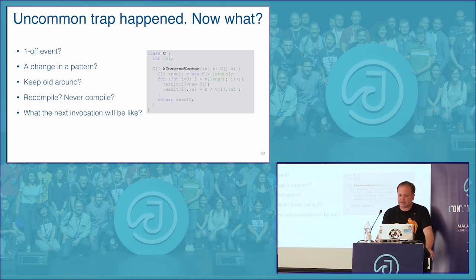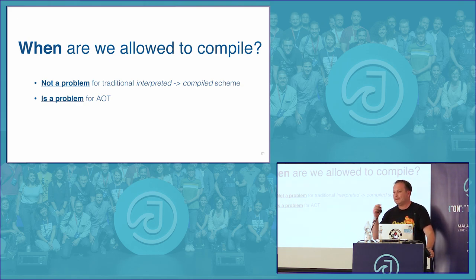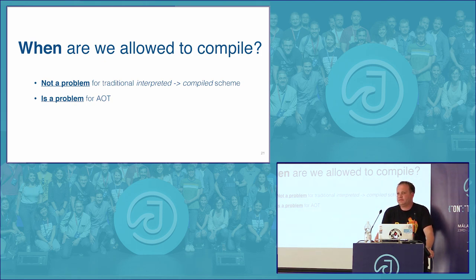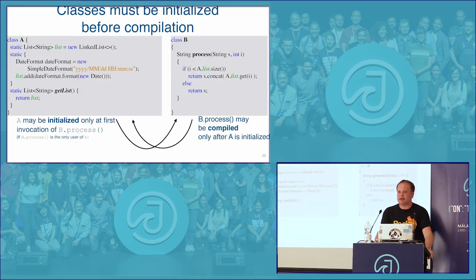Another interesting problem is: when are we able to compile? In the natural flow from interpreter to JIT, everything is initialized by the time the compiler kicks in, so that's not a problem. But all ahead-of-time compilers face a particular issue. For example, consider a class A that has only static fields, including a static initializer that captures a timestamp. It's important to know when the class is initialized — at the beginning or partway through the program.